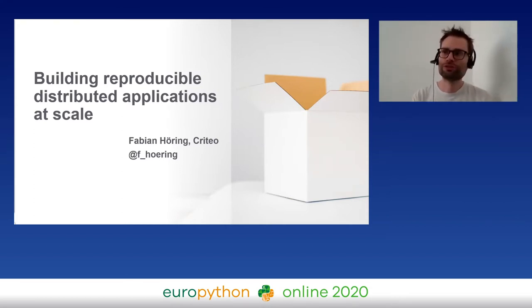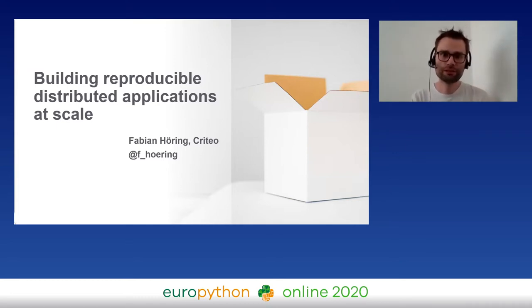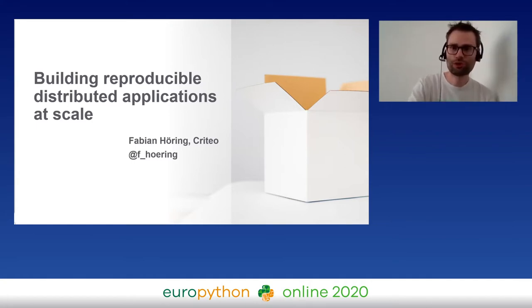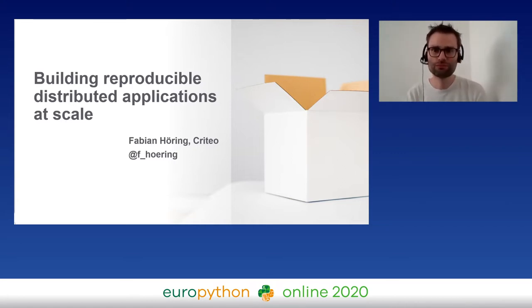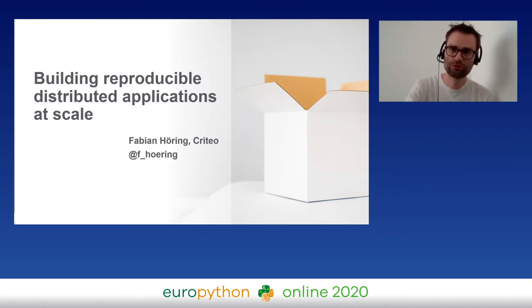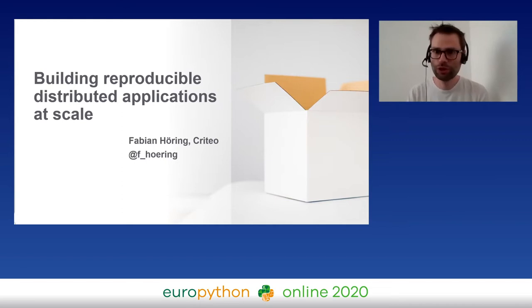What is Criteo? Criteo is a major advertising company with offices in France and the US. We are about 600 engineers and about 100 engineers working on machine learning. We don't deploy our tools in the cloud — we have our own on-premise Hadoop cluster with 3000 nodes. Every day we process petabytes of data, so scale is something we need.